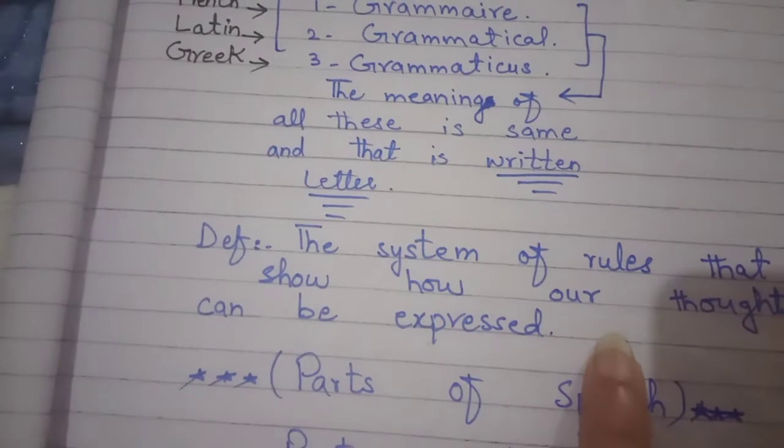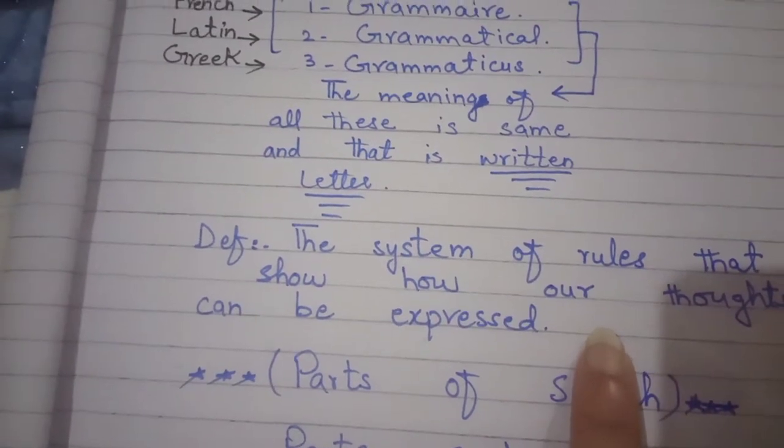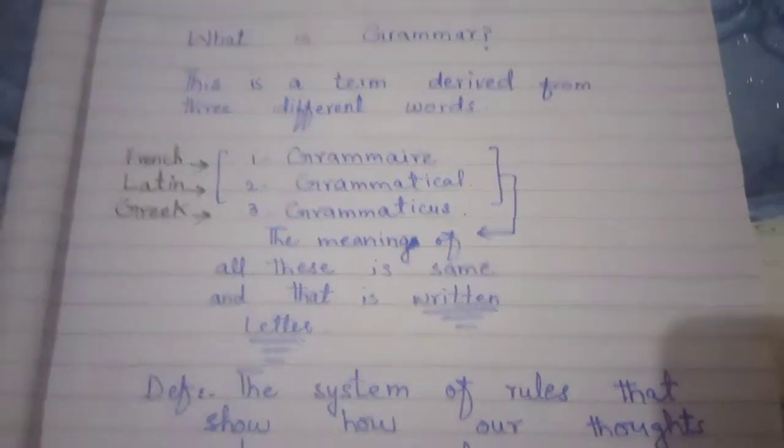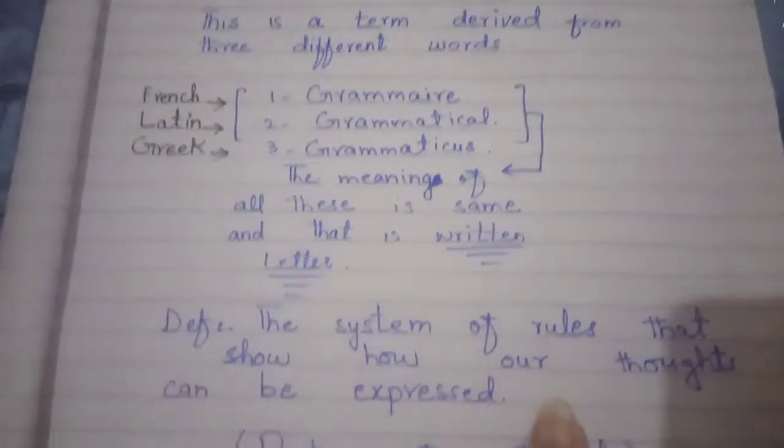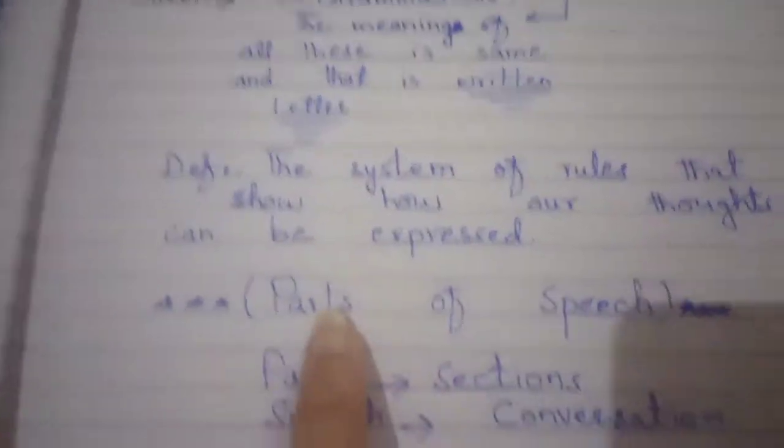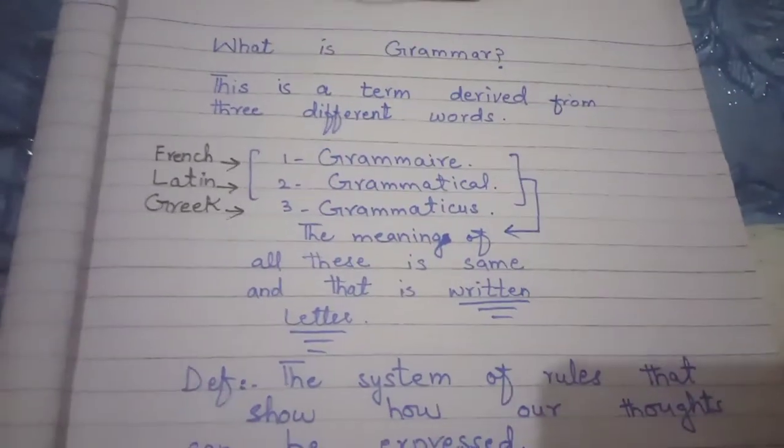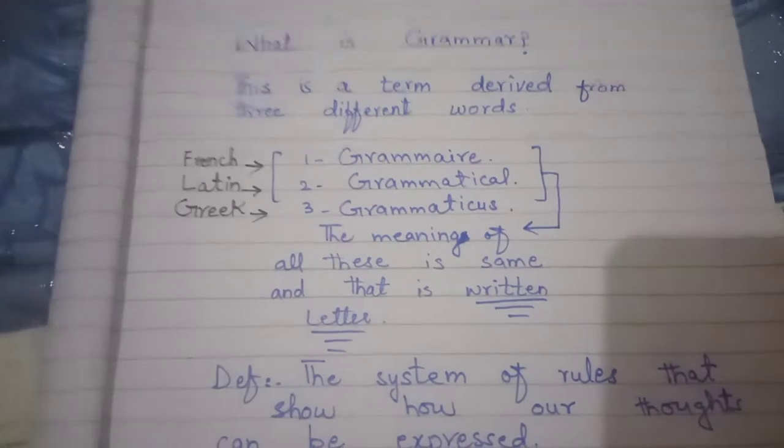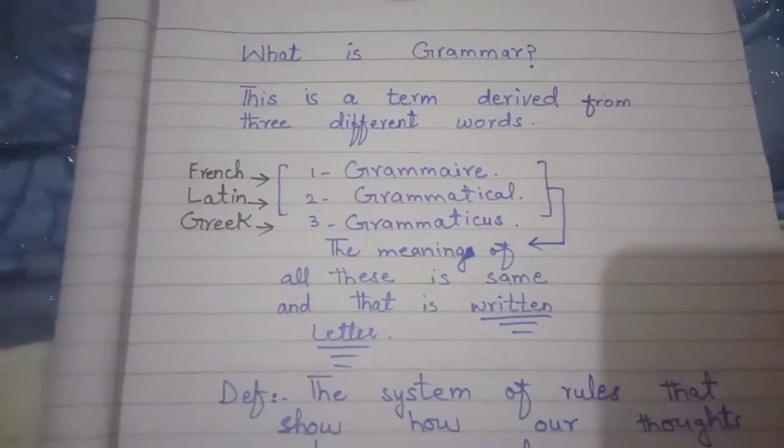Our thoughts can be expressed by language. Language can be corrected by grammar. Grammar is based on rules and regulations. So this was a short and succinct definition and clarification about grammar.